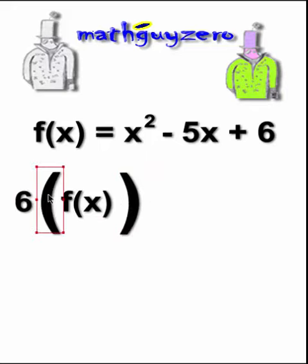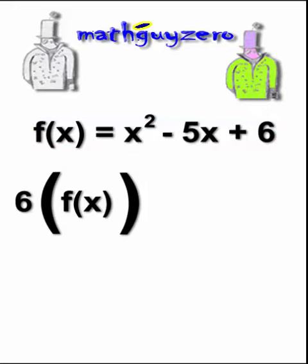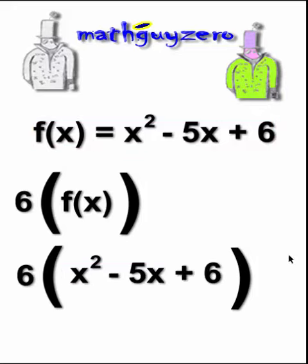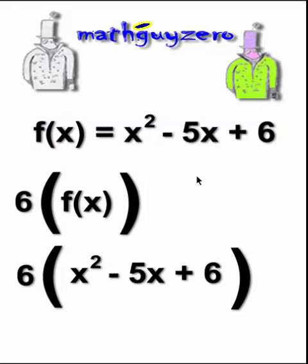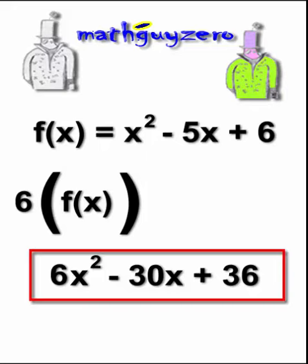You notice I got my big parentheses out there because we already know what f(x) is, right? So we're just going to substitute. Every time you see f(x), literally f(x), you're going to substitute it for this side of the equation, and then just multiply everything out. And that is your answer.